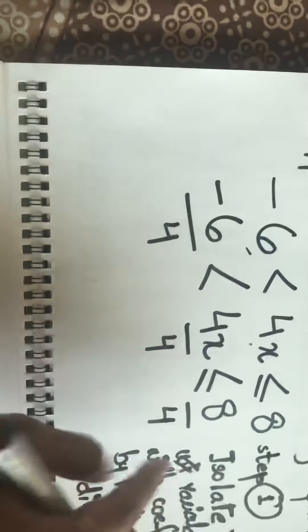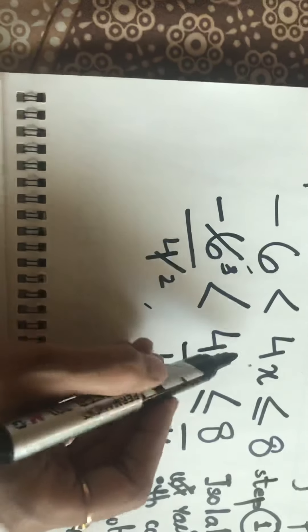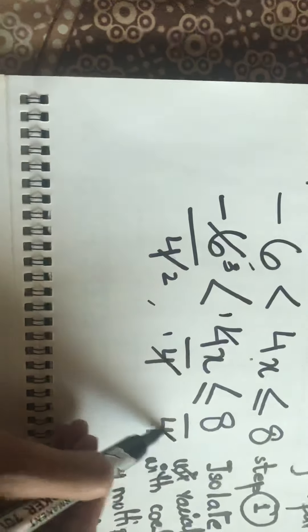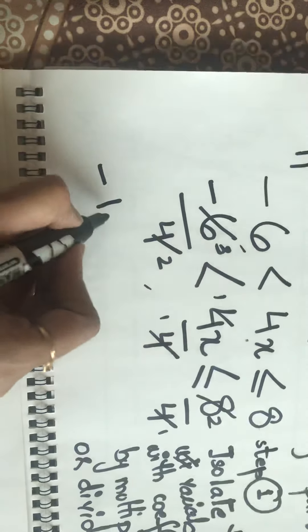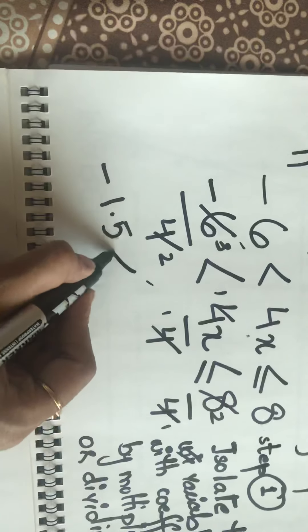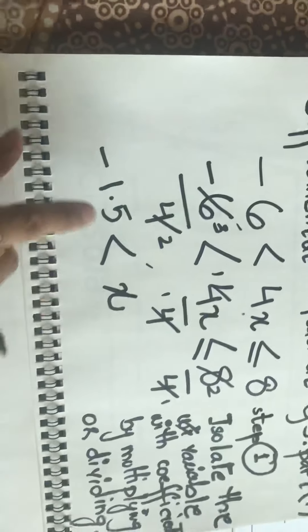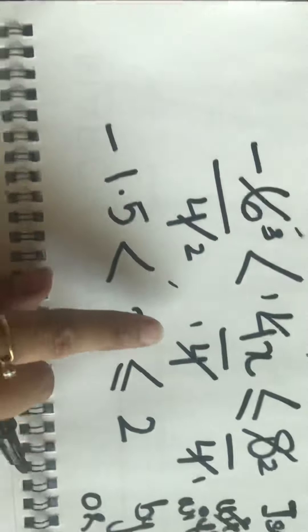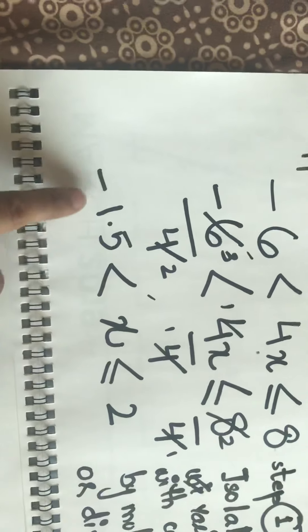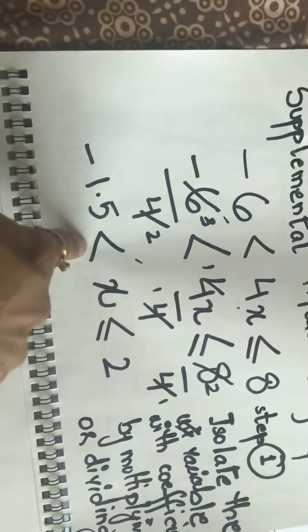Now we perform the cancellations individually. Four X divided by four leaves only X. Minus six divided by four: since three twos are six and two twos are four, we get minus three over two, which as a decimal is minus 1.5. Eight divided by four equals two. So now only X is left, and we have isolated it. We read the result: X is greater than minus 1.5 — not greater than or equal to, because we don't have that sign — and X is less than or equal to two.